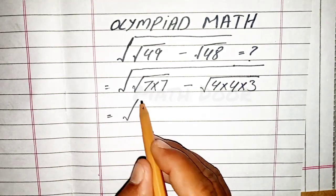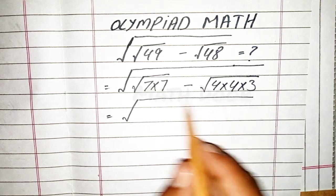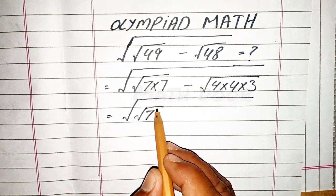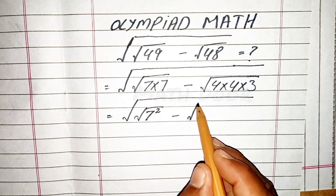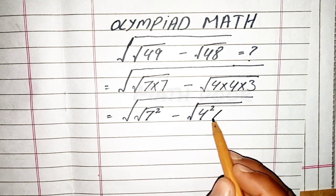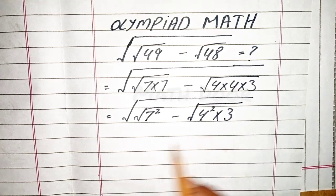Now we write 7 multiply 7 as 7 square, minus 4 multiply by 4 which we write as 4 square multiply 3.